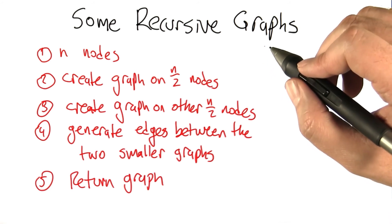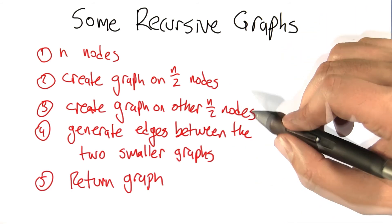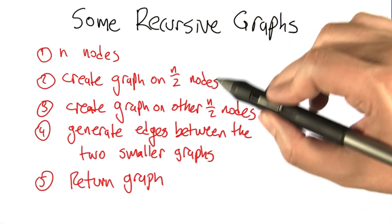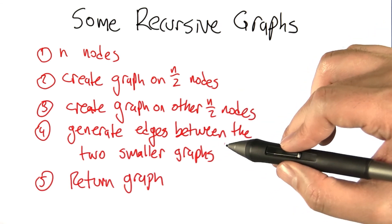So we can get a bunch of different mechanisms for generating recursive graphs with this basic structure depending on how we create the first subgraph, how we create the second subgraph, and how we connect the two subgraphs together.